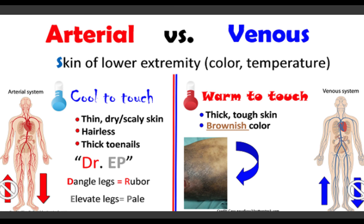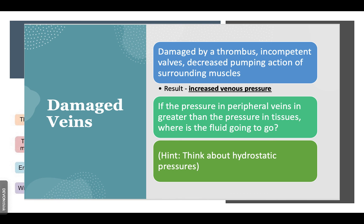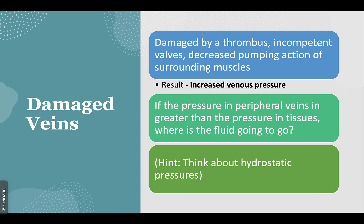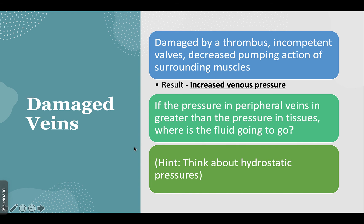A quick comparison between arterial disease and venous disease. The vessels become damaged by a thrombus, incompetent valves, and decreased pumping action of surrounding muscles — the result is increased venous pressure. If the pressure in the peripheral veins is greater than the pressure in the tissues, think about hydrostatic pressure — the fluid goes to the third space. When hydrostatic and oncotic pressure become out of balance, it moves to the interstitial space.